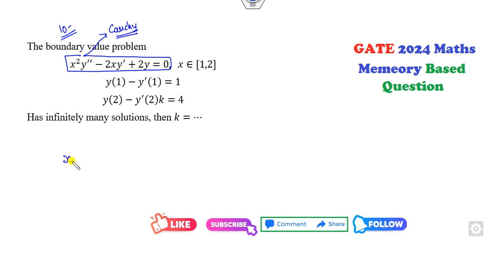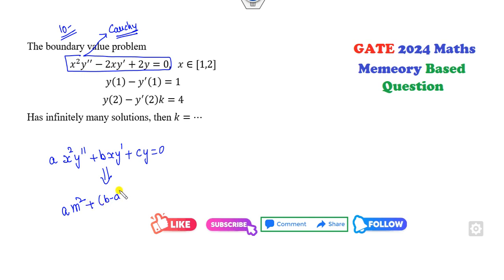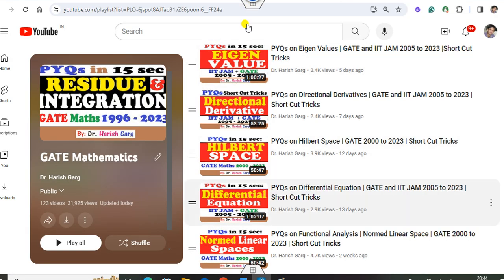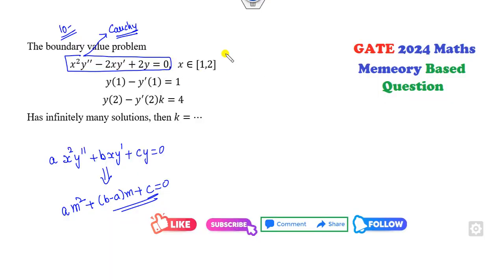The shortcut trick is: if it is ax²y'' + bxy' + cy = 0, you can write the auxiliary equation directly as am² + (b − a)m + c = 0. Applying this, a = 1, so we get m² − 3m + 2 = 0. You need hardly 5 seconds to write this equation.